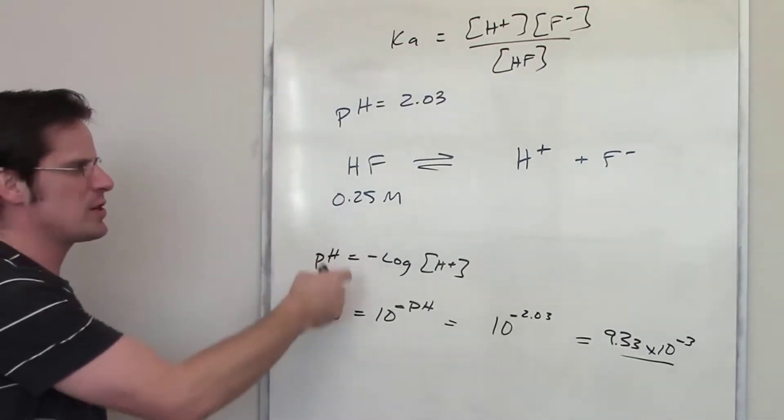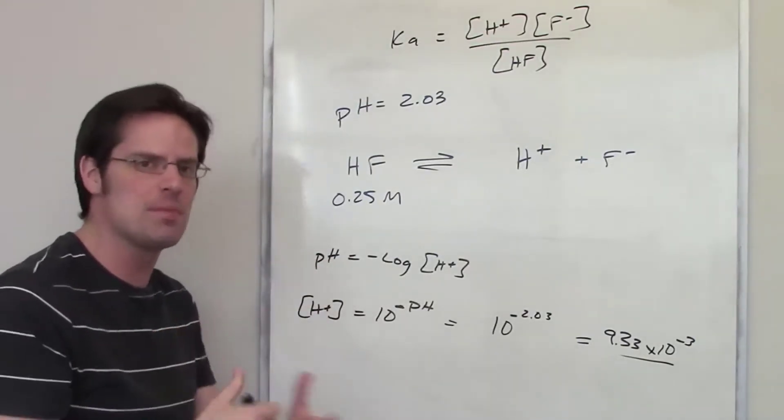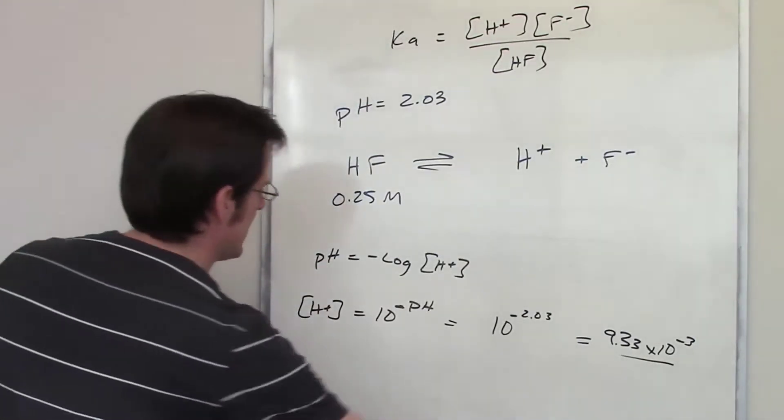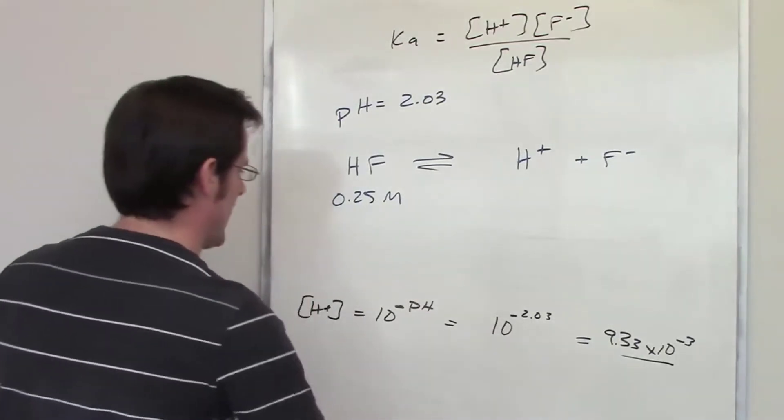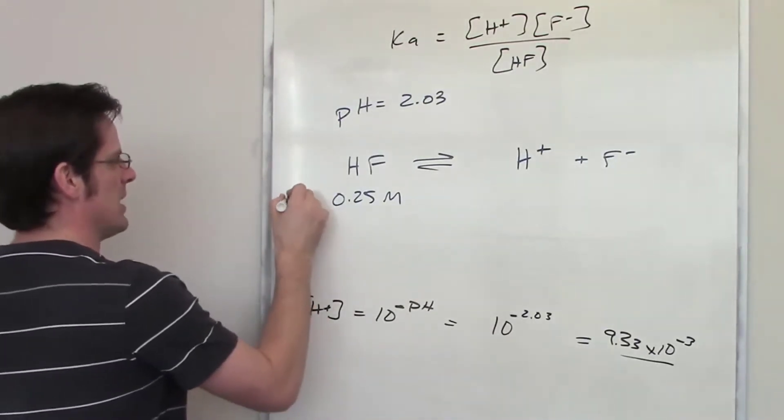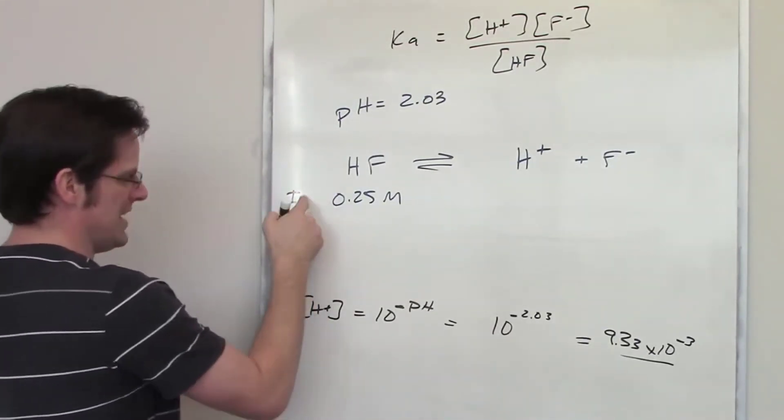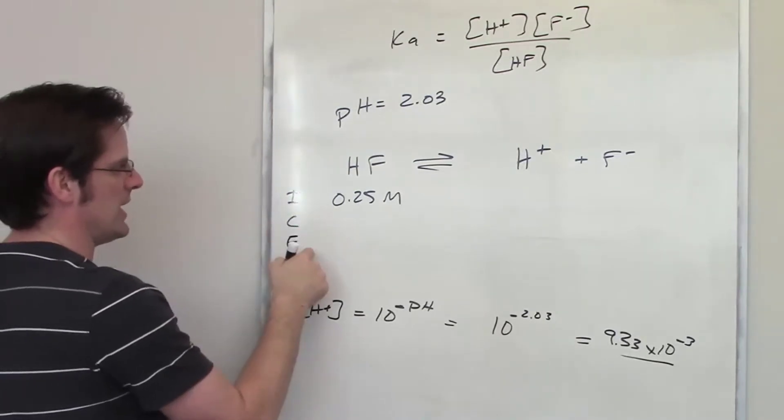So, how do I determine what HF's concentration is at the end, at equilibrium? Well, you probably guessed it, or I hope you did at least. We're going to have to set up an ICE table. So, I'll go ahead and write in ICE. ICE stands for Initial, Change, and Equilibrium.